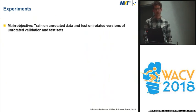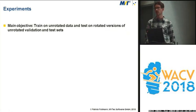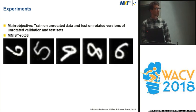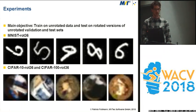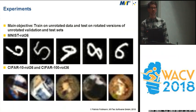We did some experiments. The main objective was to train only on upright data but evaluate also on rotations of the test images. We took MNIST and for the test images rotated each image in steps of 10 degrees to obtain MNIST-ROT-36. We did the same for CIFAR-10 and CIFAR-100. We also cropped the images circularly to avoid rotation artifacts, and we applied the same cropping to the training images — though the training images were only upright.